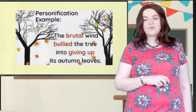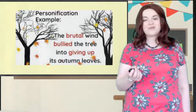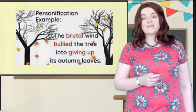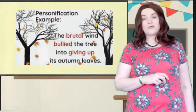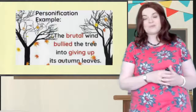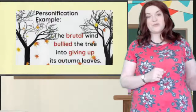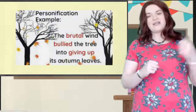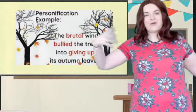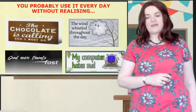Here's a wee example: the brutal wind bullied the tree into giving up its autumn leaves. Obviously the idea of a bully is a person who's alive — a school bully, for example. So the idea of the wind bullying the tree is effective because it makes us imagine it's towering over the tree, showing it who's boss, that sort of thing.